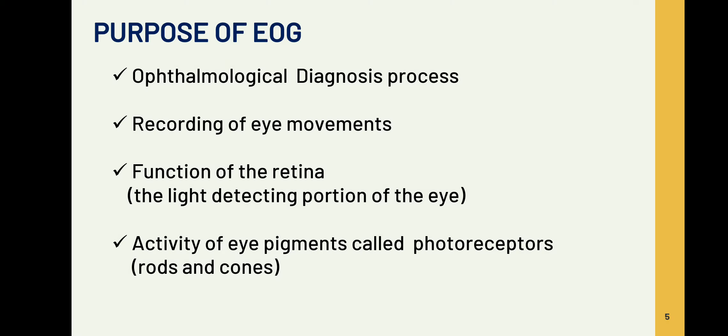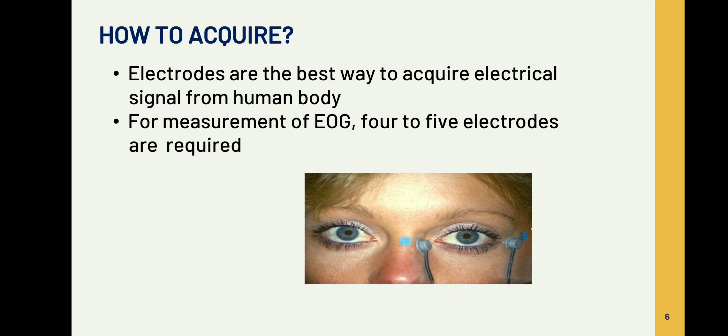What are the purposes of EOG? The first thing is to detect eye related diseases, that is ophthalmological diagnosis processes. Second is eye movement recording. Next is measuring the function of the retina. And the fourth thing is measuring the activity of the eye pigments. We know that eye pigments are rods and cones. Rods are responsible for our vision in dim light and cones are responsible for our vision in bright light. So the activity of these eye pigments can be measured using EOG.